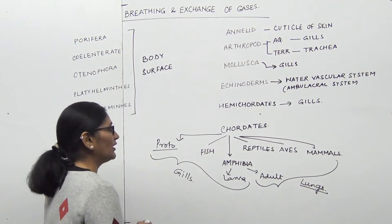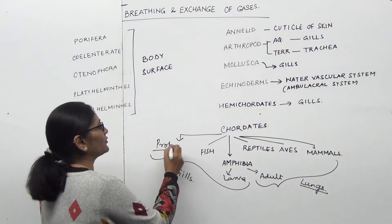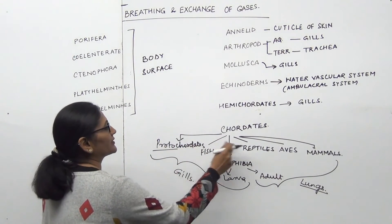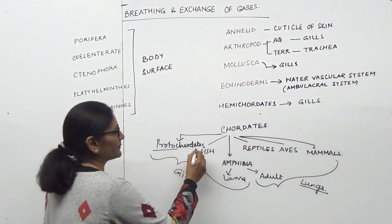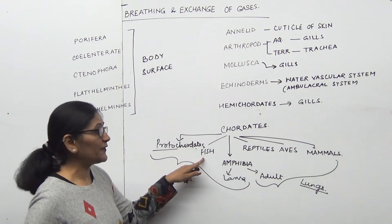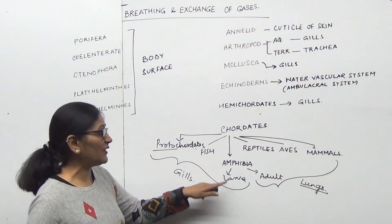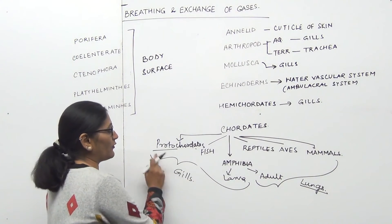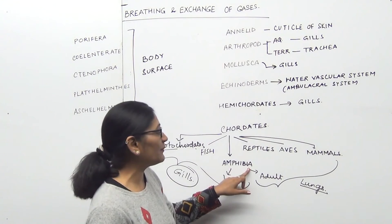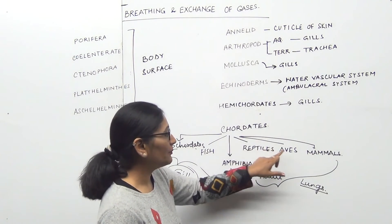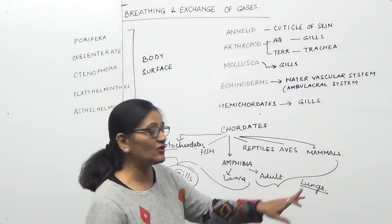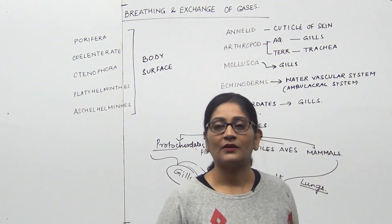Coming to Chordates: they are divided into Protocordates and Vertebrates. Protocordates are exclusively marine, fish are aquatic, and amphibian larvae are aquatic — so in all these aquatic forms the respiratory organ is gills. However, adult amphibians, reptiles, birds, and mammals are terrestrial, and their respiratory organ is lungs.